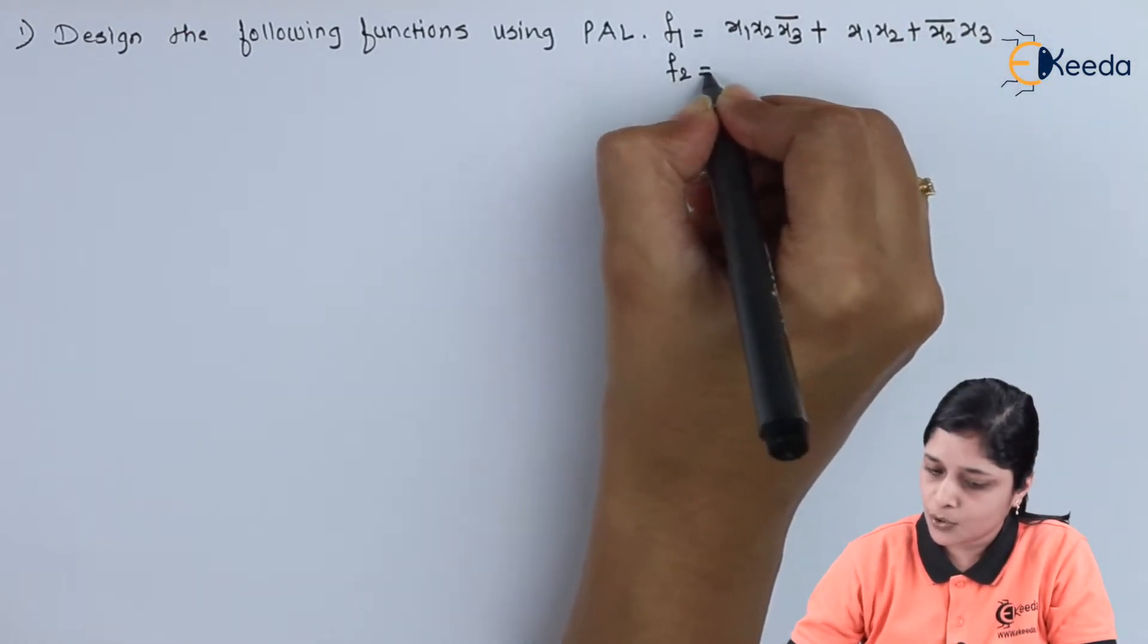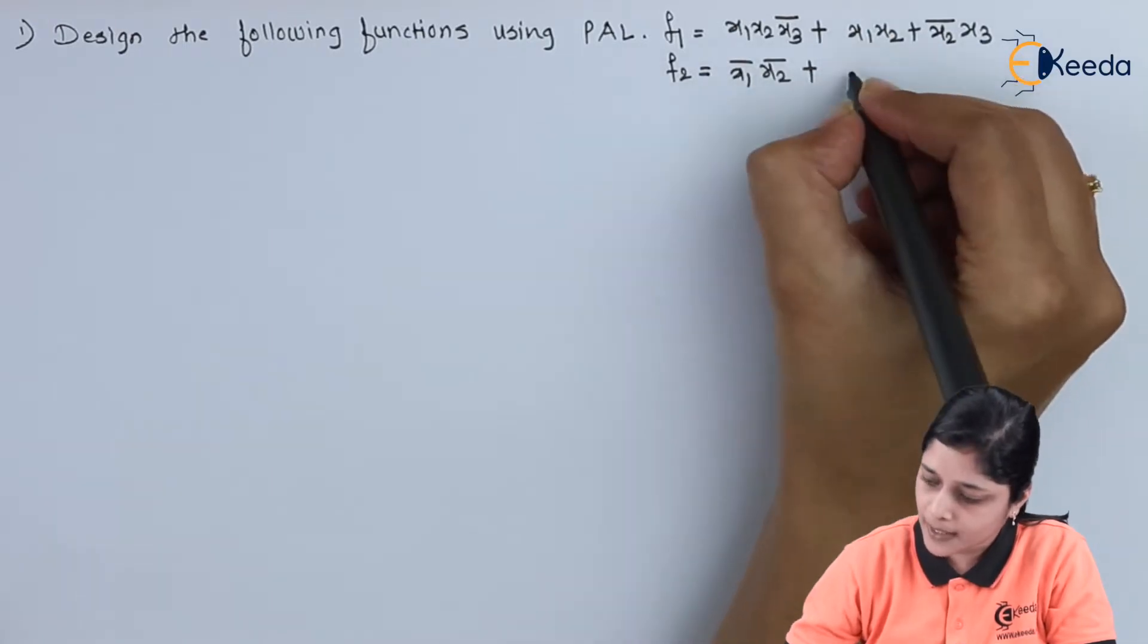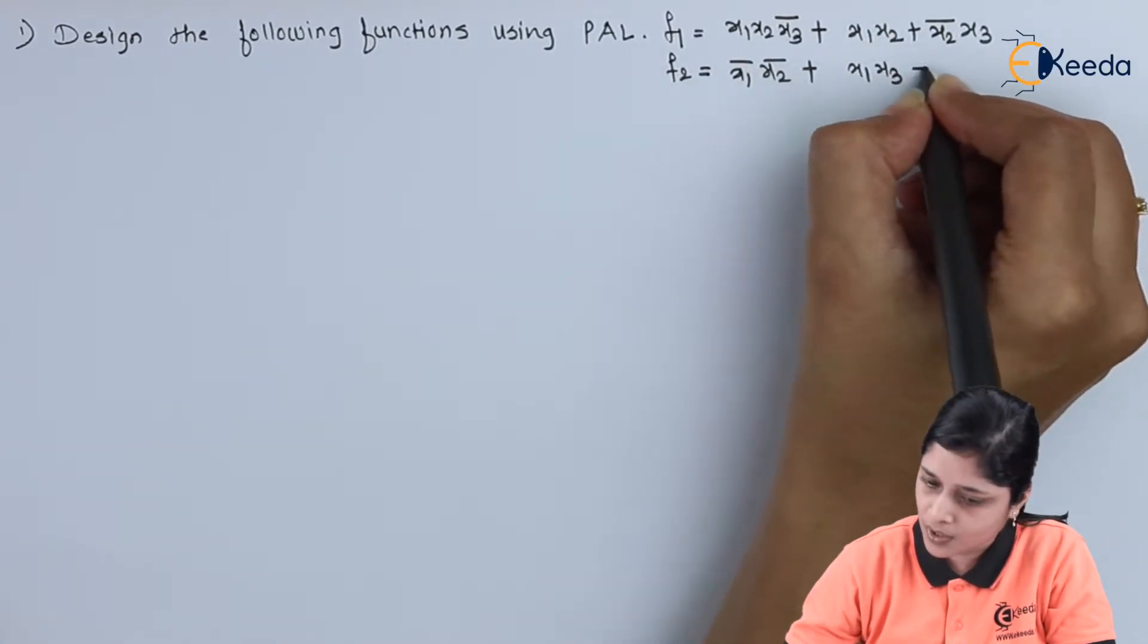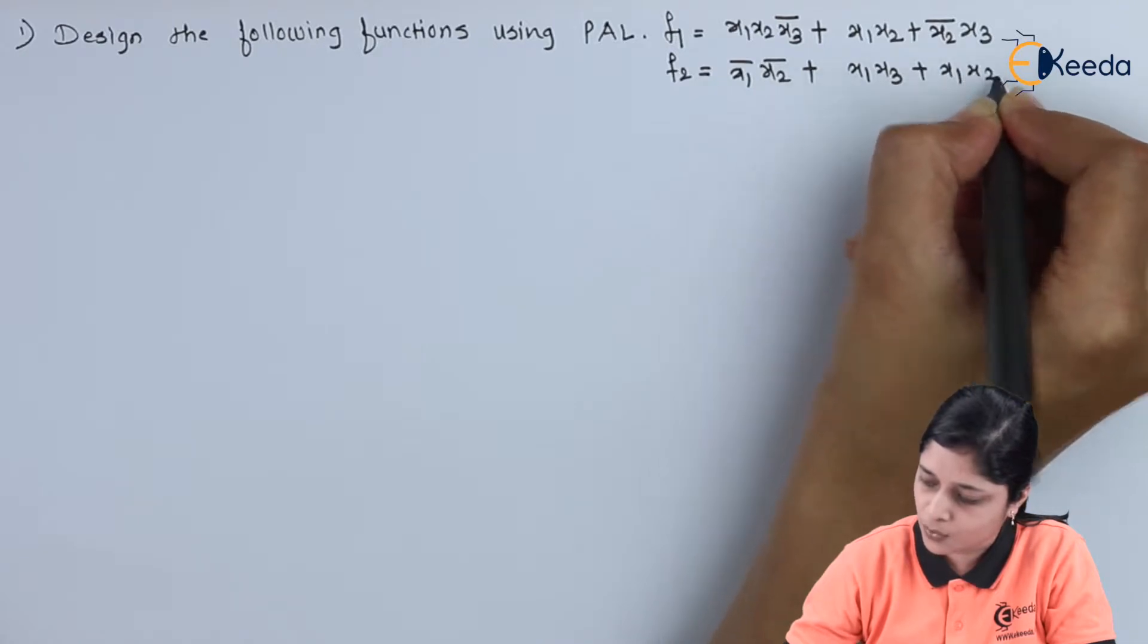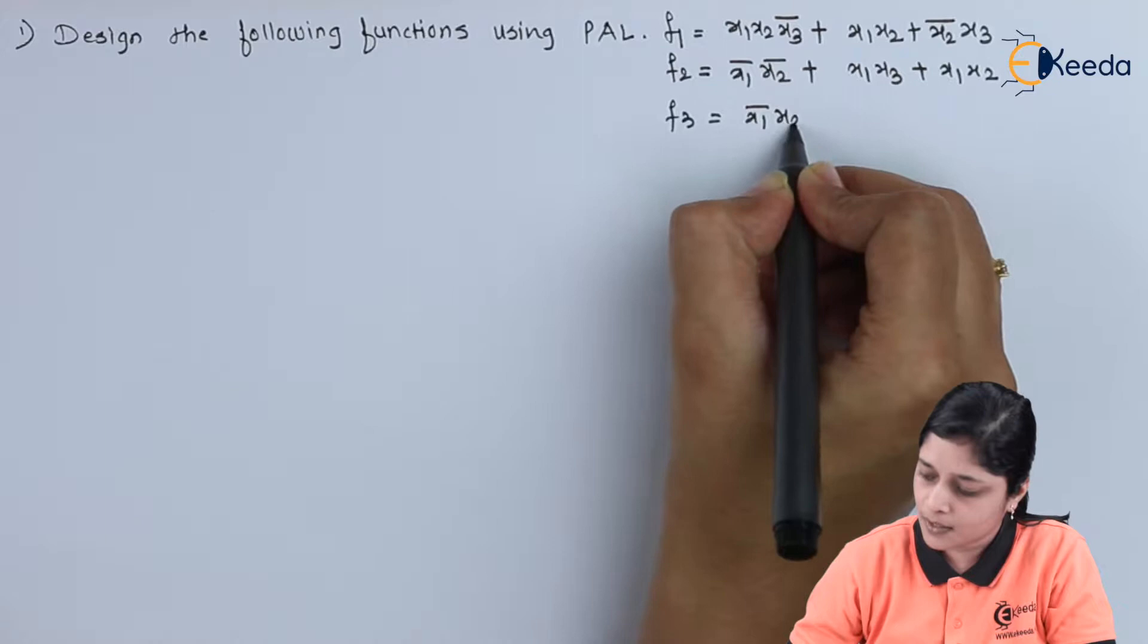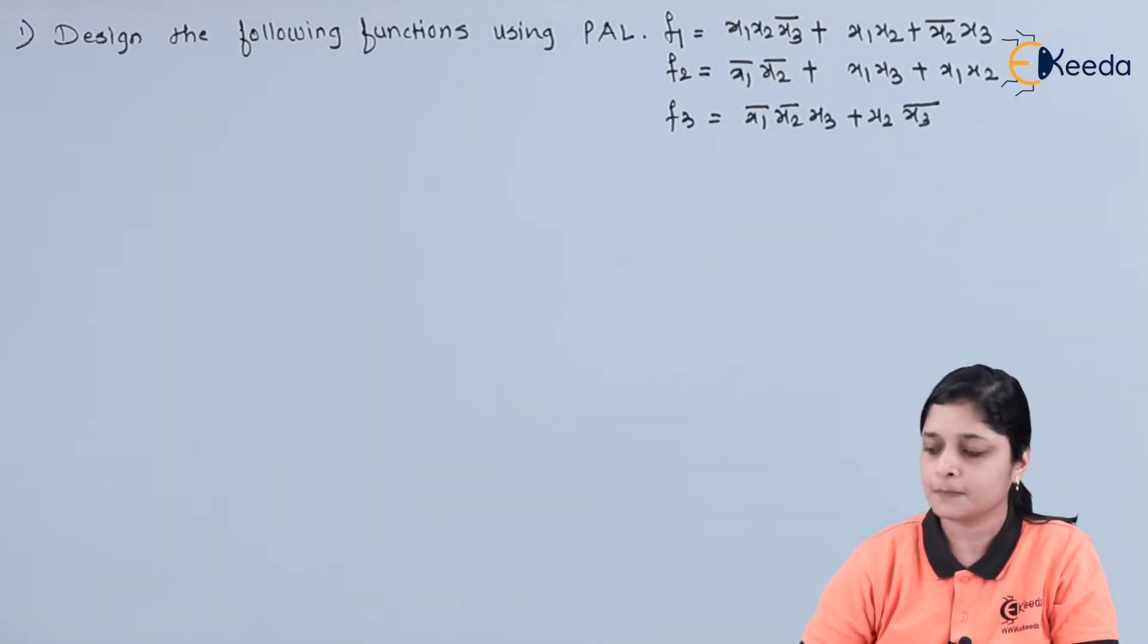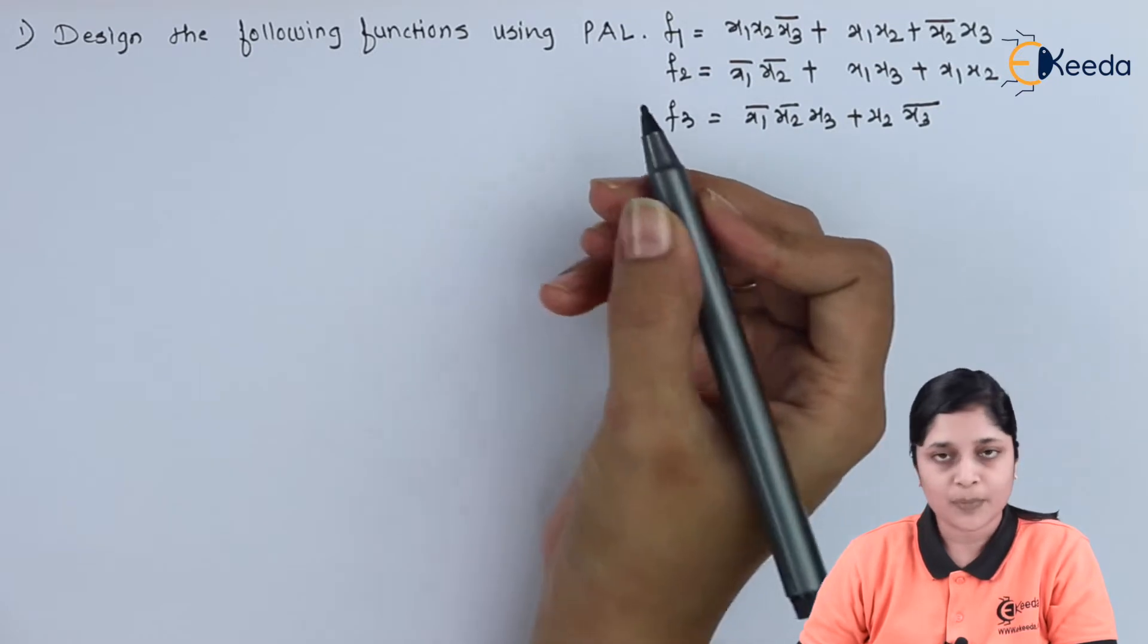Function 2 is x1 bar x2 bar plus x1 x3 plus x1 x2. F3 is x1 bar x2 bar x3 plus x2 x3 bar. These functions you have to implement using PAL. Let's start with the implementation.